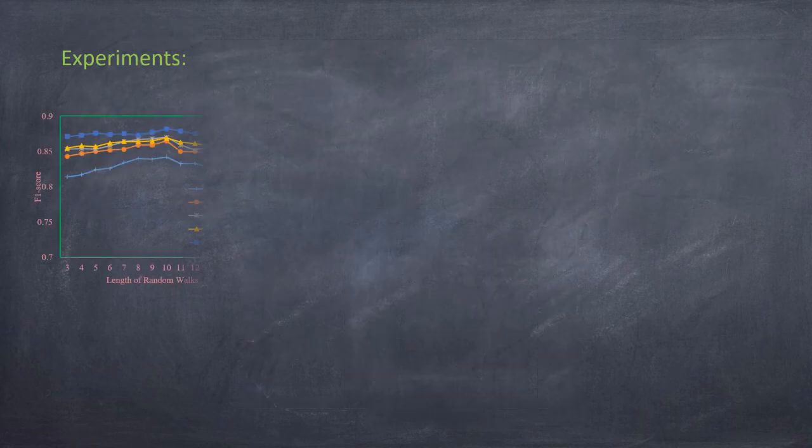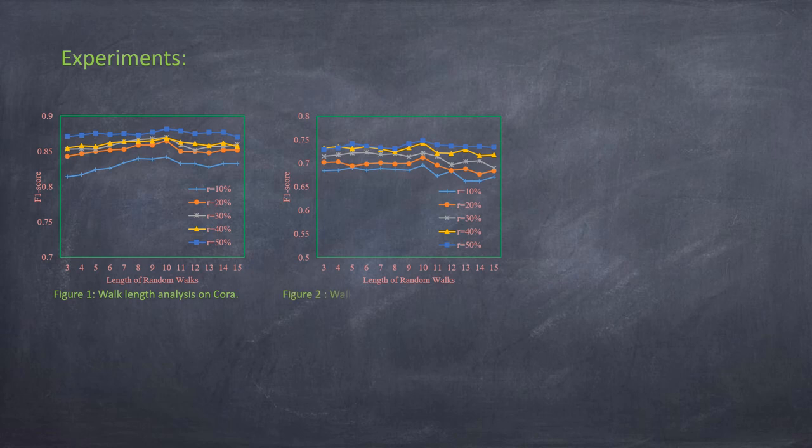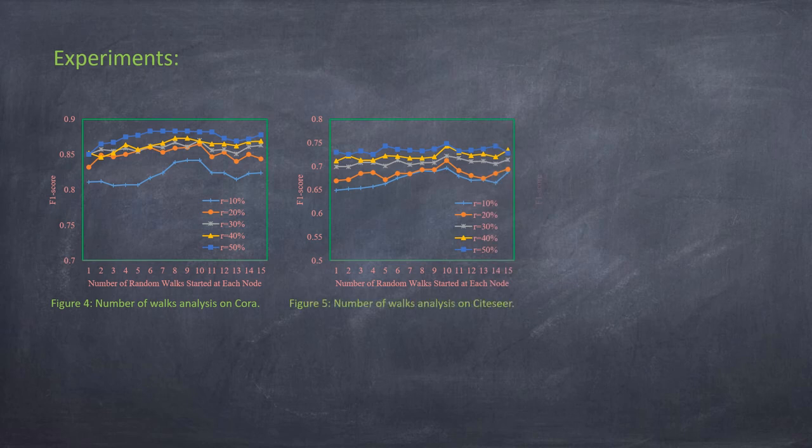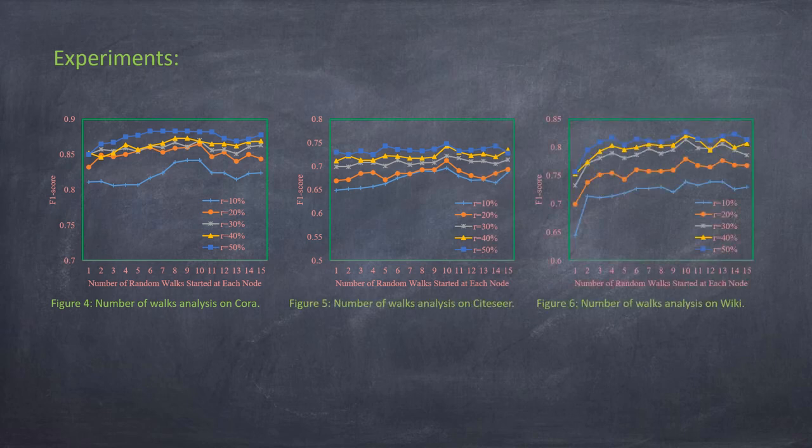The length of random walks has been analyzed, where 10 is optimal. The number of random walks started at each node has also been analyzed, where 10 is the best choice.